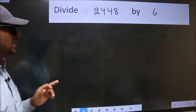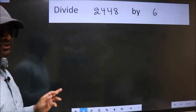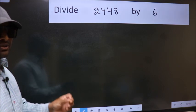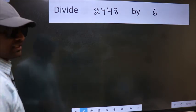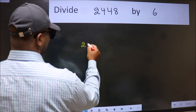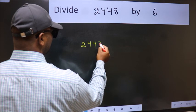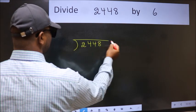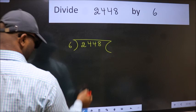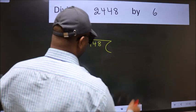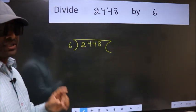Divide 2448 by 6. To do this division, we should frame it in this way: 2448 here, 6 here. This is your step 1.